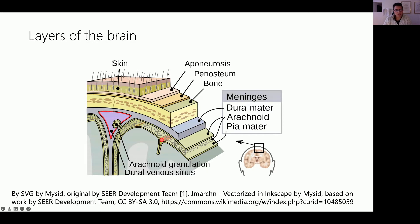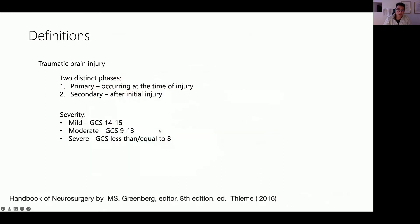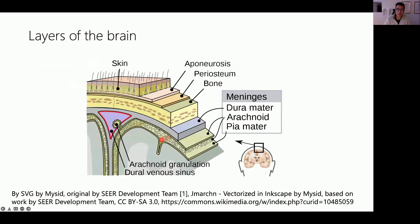A useful mnemonic for the layers of the scalp is SCALP: Skin, dense Connective tissue, Aponeurosis (also known as the galea, the layer sutured when closing a craniotomy), Loose connective tissue, and Periosteum. We also have the skull, and beneath it the three meninges: the dura mater, arachnoid layer, and pia mater. The pia mater is adherent to the brain surface. Blood vessels and arteries run in the arachnoid layer, giving rise to subarachnoid hemorrhage. The dura mater has bridging veins that drain into the dural venous sinuses.